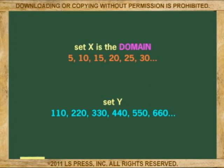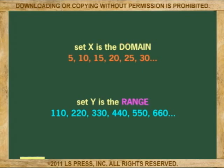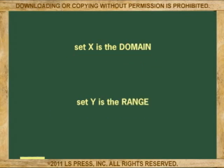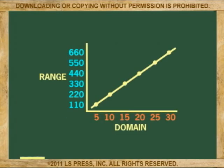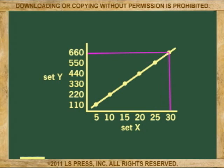The set X is called the domain and the set Y is called the range. In other words, these sets of numbers may be plotted and shown as a graph. Notice that because the data moves from left to right, a number in set X may only have one matching number from set Y.